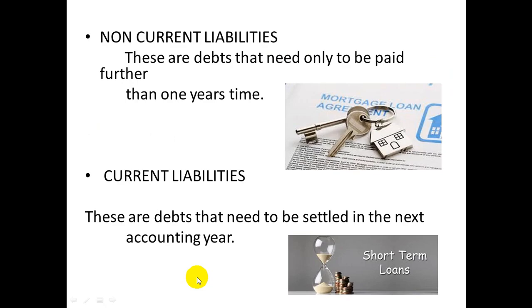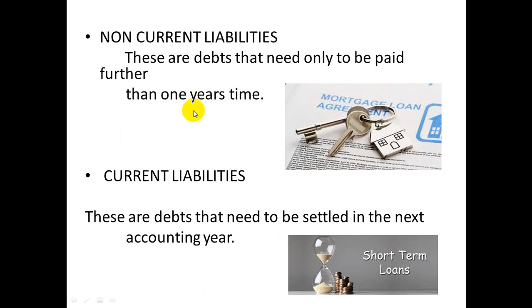A recap on non-current liabilities: just like non-current assets, these are debts that only need to be paid further than one year's time — paid over more than 12 months. Just as non-current assets are things you keep longer than 12 months, non-current liabilities are debts or money you owe that you pay off over more than 12 months.